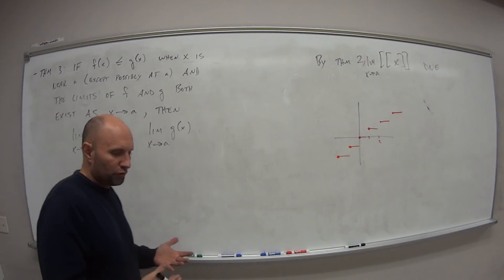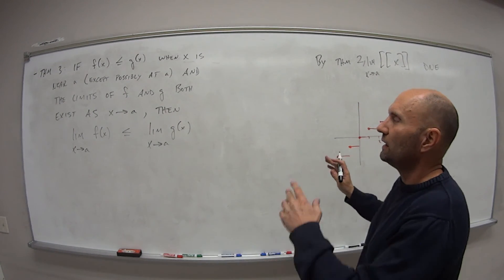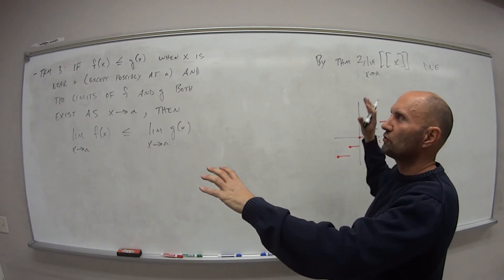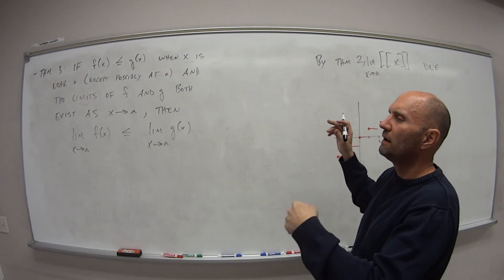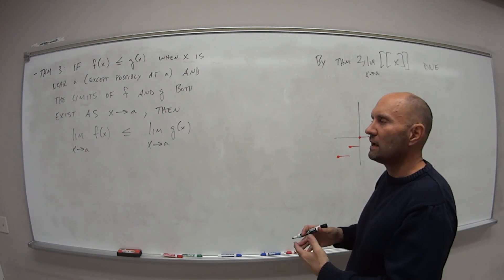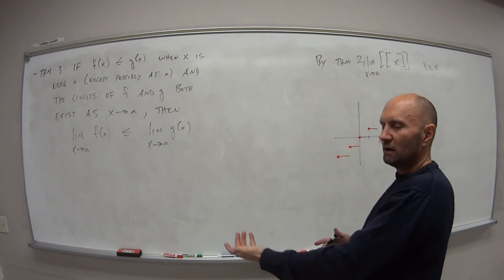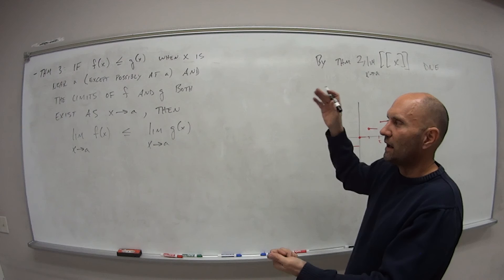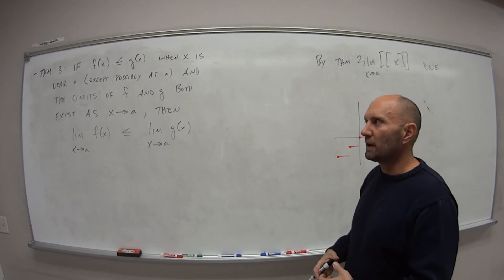A lot of words, what is this talking about? So I have two functions. And if the function evaluated, if the number evaluated at one function is always less than the other function, then as I approach some value A, their limits are also going to have that same relationship. The limit as X approaches A of F of X is going to be less than the limit as X approaches A of G of X.